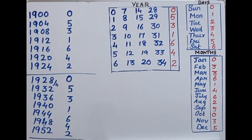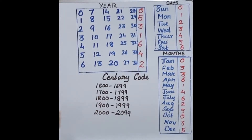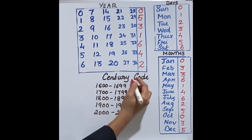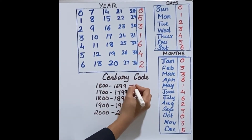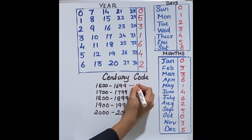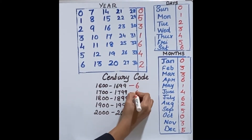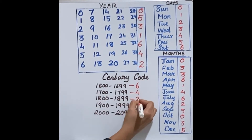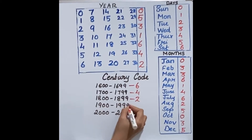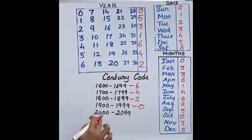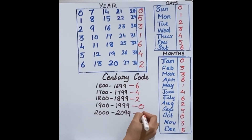This completes the year table. For the century code, if the year falls in one range the code is 6; the next range gives 4; then 2; then 0; and the following range gives 6 again. You substitute the century code based on which century the year falls in.